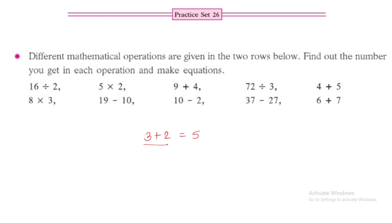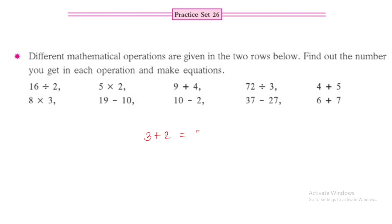If we have two sides here — one left-hand side and the right-hand side — the two values are the same. That's why they are joined to each other. The equation is 3 plus 2 is equal to 7 minus 2. So 3 plus 2 is equal to 5, and 7 minus 2 is also equal to 5. That's why these two are equal.